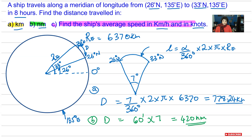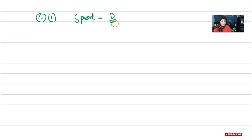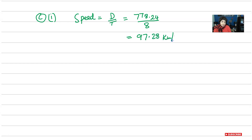For Part C, we are asked to find speed in kilometres per hour. Speed is just distance over time. If we want it in kilometres per hour, we take the distance in kilometres, which is 778.24, and we were given that time is 8 hours. So we divide by 8, and that gives us 97.28 kilometres per hour.